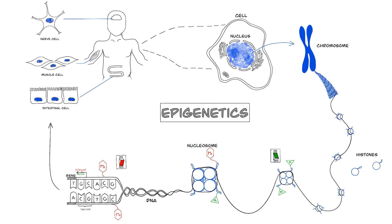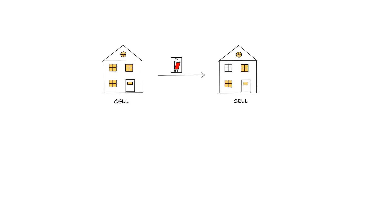Our cells are constantly exposed to damages that can cause genetic lesions and epigenetic aberrations. A faulty epigenetic switch can alter expression of one gene like turning off the light in one room in a house, which will have a limited effect on the cell.